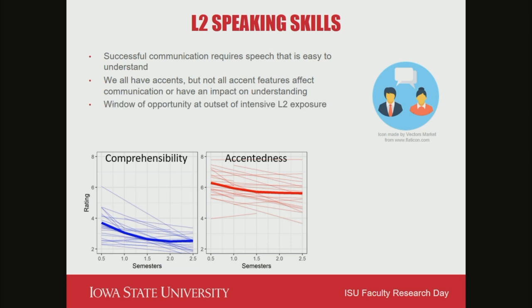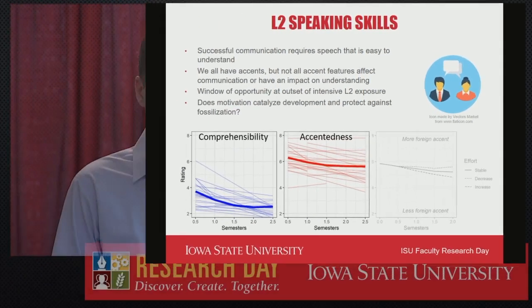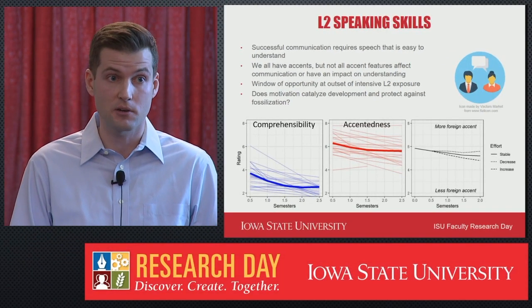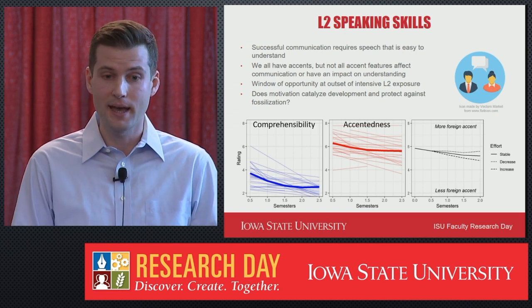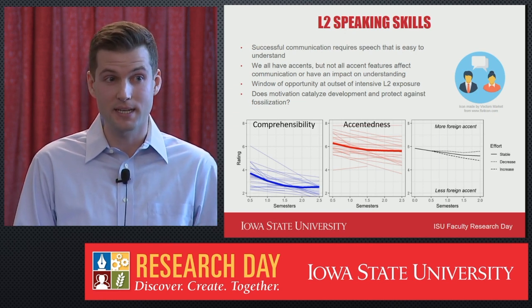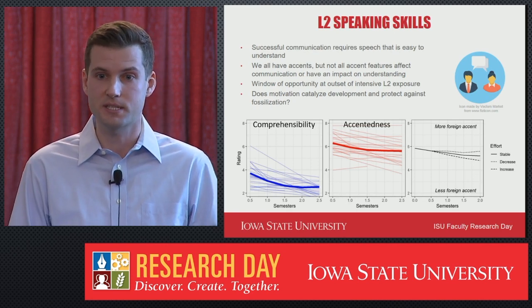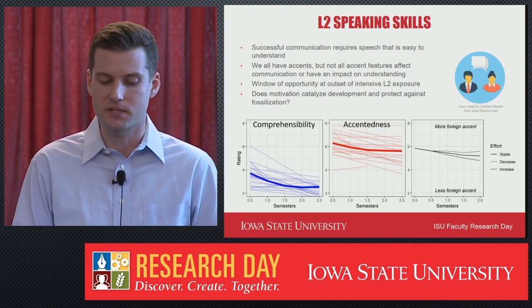Both plots illustrate another point in L2 speech development research, which is the window of maximal opportunity that occurs at the outset of intensive L2 exposure. If you look at those thick bold lines, which represent the group trajectories, you can see that particularly for comprehensibility, after about one and a half to two semesters, trajectories begin to level off. And so the fundamental question for me then becomes, does motivation catalyze or accelerate development over time? And could it potentially protect against or mitigate that fossilization or stabilization we see after approximately one and a half to two semesters?